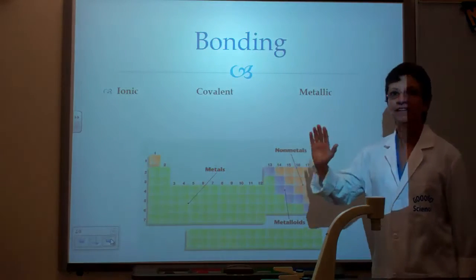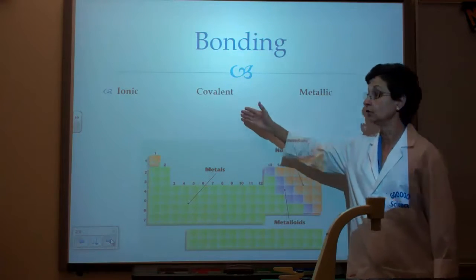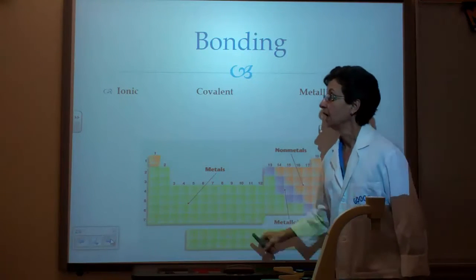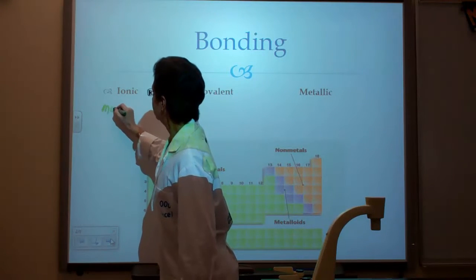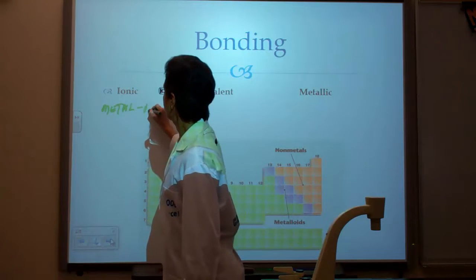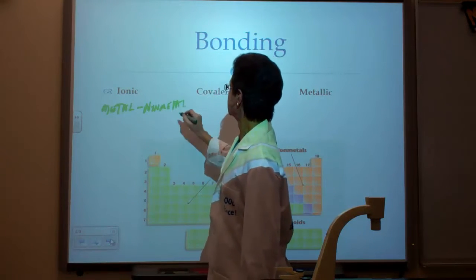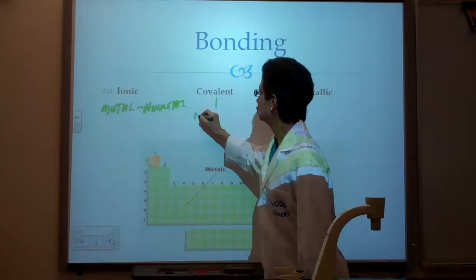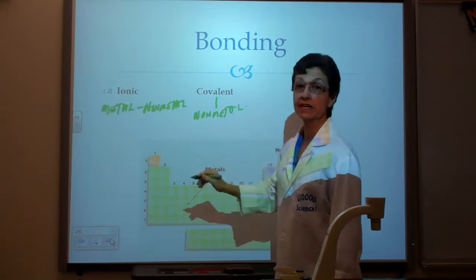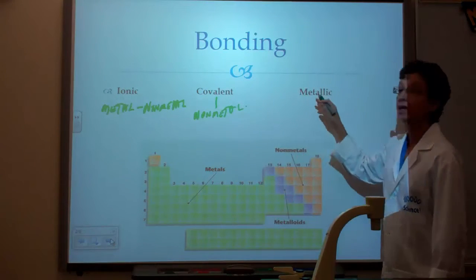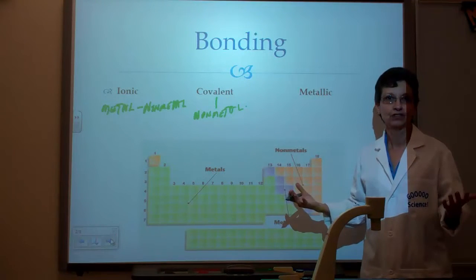There are three types of bonding that we're going to concentrate on: ionic bonding, covalent bonding, and metallic bonding. Ionic bonding is a metal with a nonmetal. Covalent bonding involves two nonmetals. Metallic bonds, as the name implies, has to do with metals only.